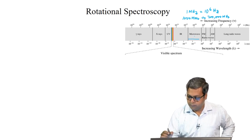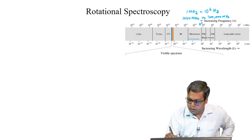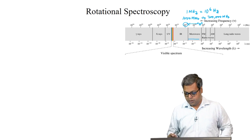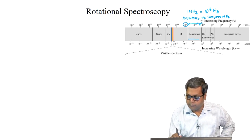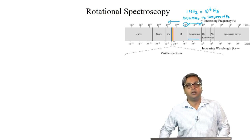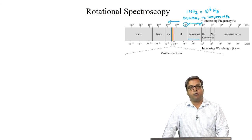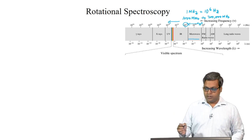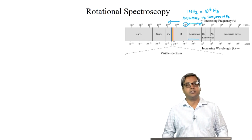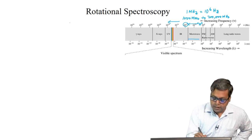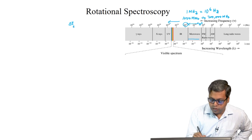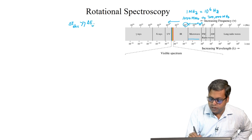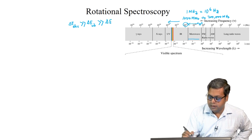Roughly speaking, the microwave region falls between 10 to the power 9 to 10 to the power 12 hertz. And in this electromagnetic spectrum, the frequency is increasing towards the left. As we have also discussed before, for different transitions like electronic, rotational, vibrational — the delta E electronic is much greater than delta E vibrational, which is much greater than delta E rotational.